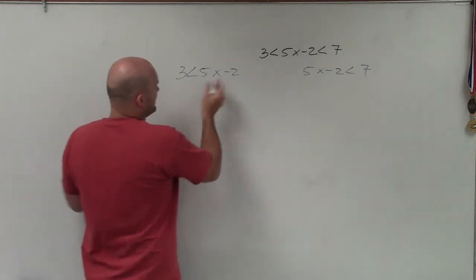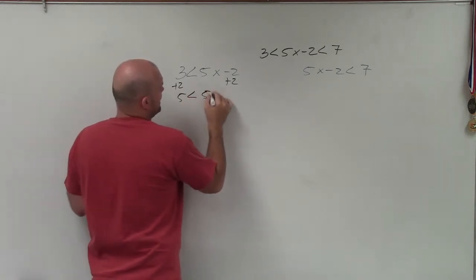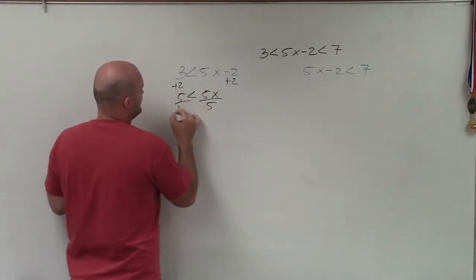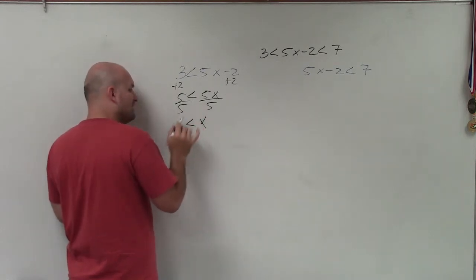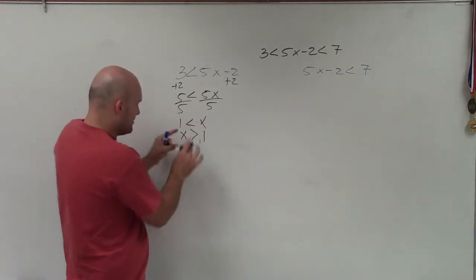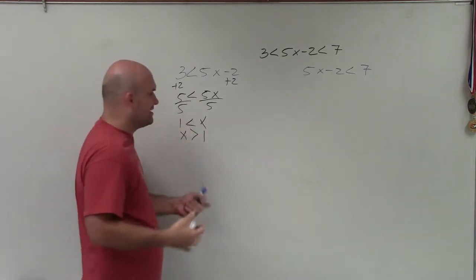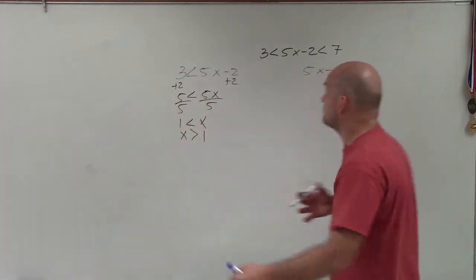So to solve here, I need to solve for x. I'm going to add 2, add 2. And I have 5 is less than 5x, divide by 5, divide by 5. And I have 1 is less than x. 1 is less than x, or you could say x is greater than 1. Notice how the alligator teeth are always eating up at the variable. You can leave it either way. I think it's just important for you to know how to go back and forth.